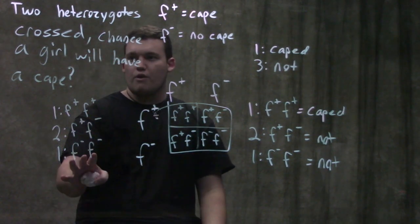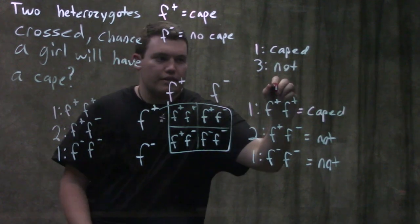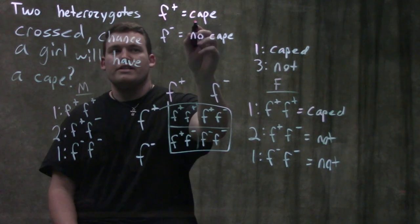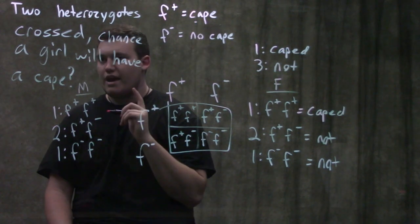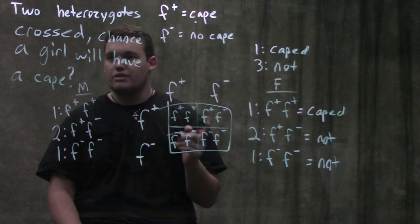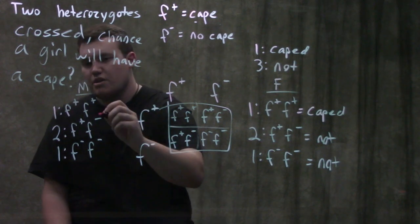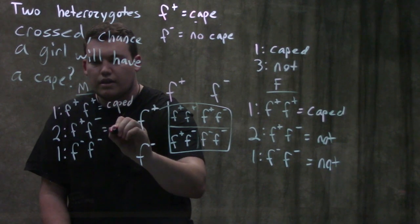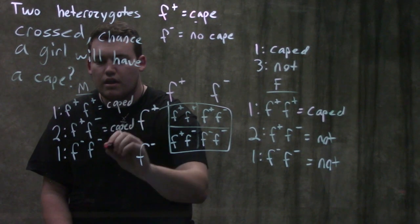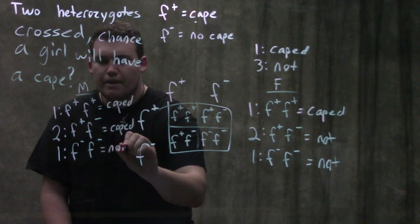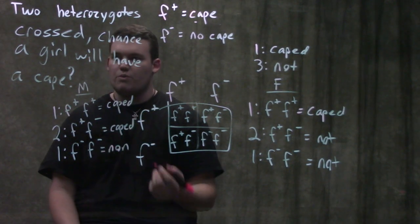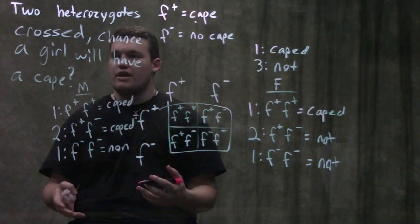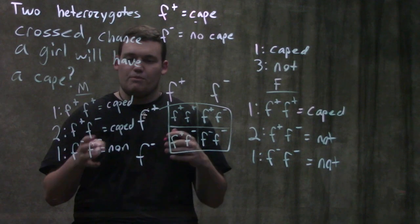For males, the caped allele is dominant, so as long as we have one caped allele we show the cape. That means: caped, caped, caped, and not caped. So we've got a 3:1 ratio — three out of four males, or 75%, are going to have a cape, and 25% will not. That's the exact flip of the female result.